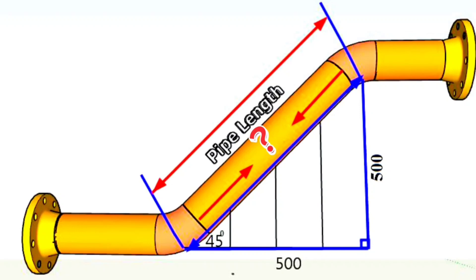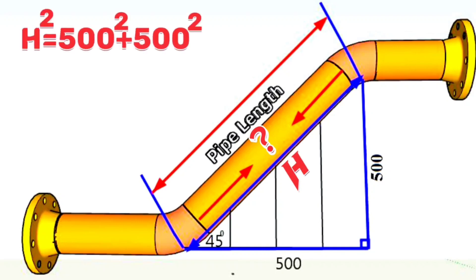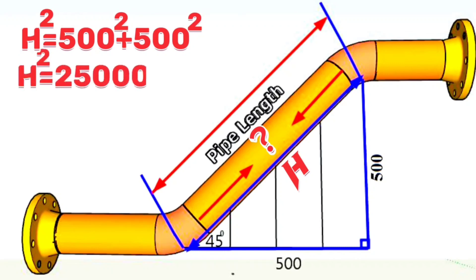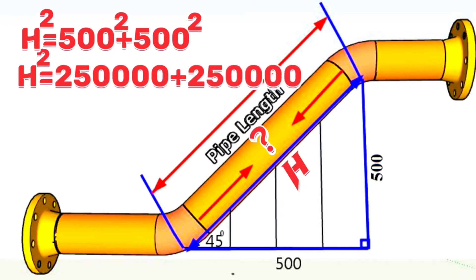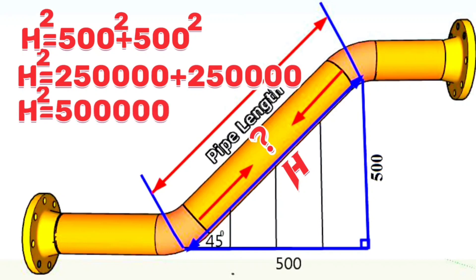If we write the hypotenuse as H, then H-squared is equal to 500-squared plus 500-squared. The square of H is equal to 250,000 plus 250,000. The square of H is equal to 500,000. After freeing H from the square, we found that the length of H is equal to 707 mm.